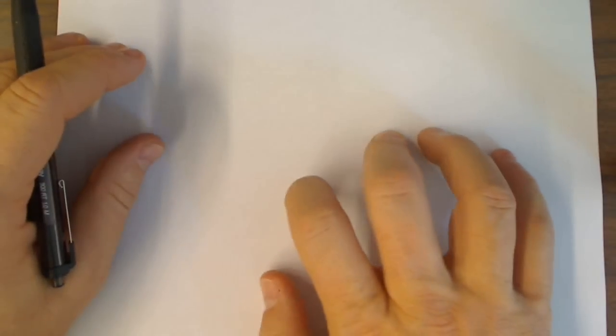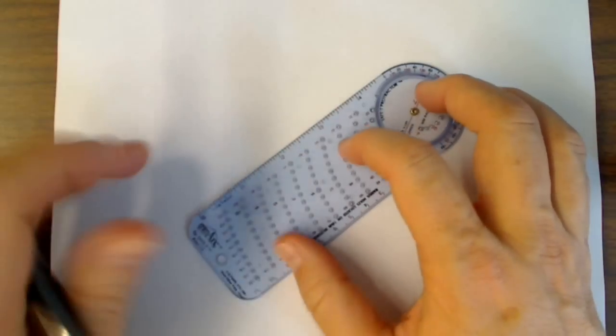This is construction number 10. Given a triangle, construct a circle circumscribed about the triangle. So, we'll start with a triangle.